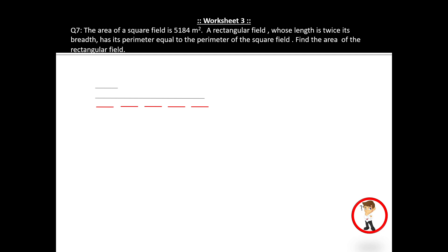Students, this question is very important for your exam. Before we solve it, remember: the area of a square field equals side squared. The perimeter of a rectangle is 2(L+B), and the perimeter of a square field is 4 times the side.